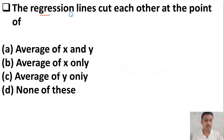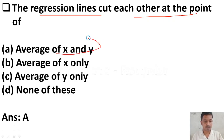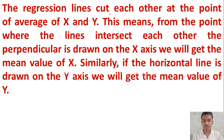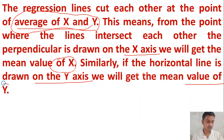The next question: the regression lines cut each other at the point of — option A average of X and Y, option B average of X only, option C average of Y only, option D none of these. The regression lines cut each other at the point of the average of X and Y. From the intersection point, drawing a perpendicular to the X-axis gives the value of X, and drawing a horizontal line gives the value of Y.